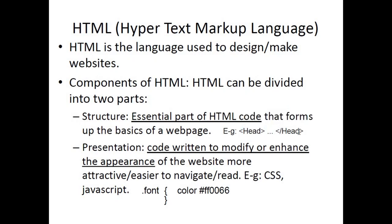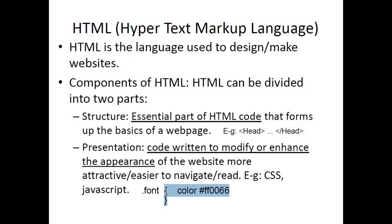HTML structure code always contains angular brackets — the less-than and greater-than signs. CSS or presentation code always has curly brackets. This is the basic method of identifying which given code is HTML structure and which is CSS presentation. Since the details of HTML tags and CSS script are not part of the syllabus, just remember: angular brackets indicate structure, curly brackets indicate presentation — these are the biggest differences between the two.